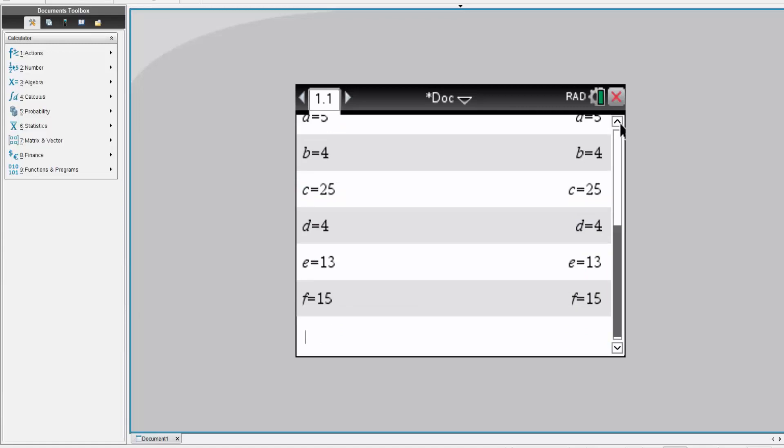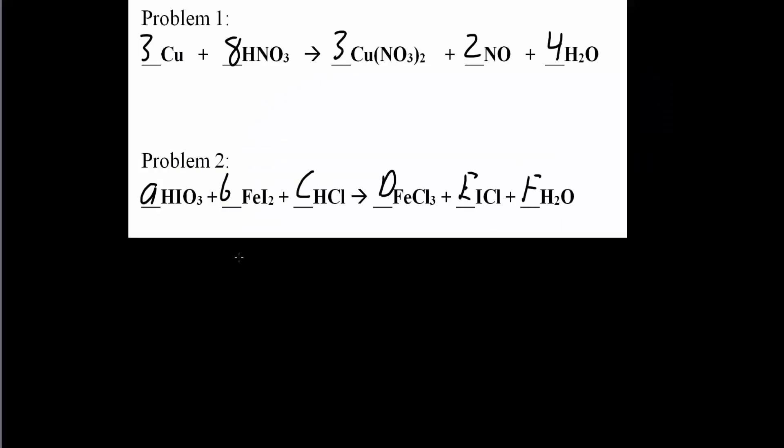And so now we simply replace. And so now I'm simply going to replace what we got from the calculator into this equation. So replace A with the A value, B with B value and C with C value. And so let's do that. So A we said was 5. B we said was 4. C we said was 25. D we said was 4. And E we said was 13. And finally, F was 15.